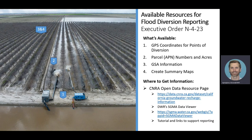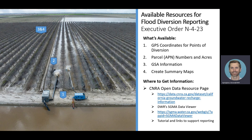Welcome to a tutorial on available resources for flood diversion reporting as part of Executive Order N-4-23. This executive order reporting is administered by the California State Water Resources Control Board. This tutorial highlights some available online resources that may be helpful when determining GPS coordinates for points of diversion, parcel information such as numbers and acres, groundwater sustainability agency information, and the ability to create summary maps.